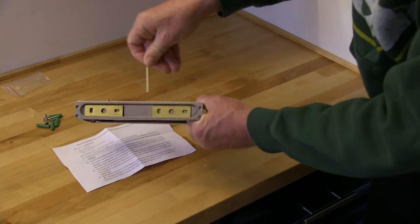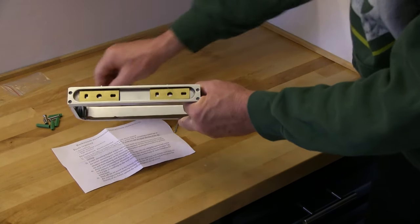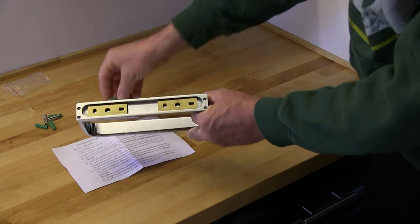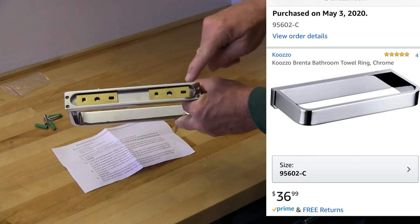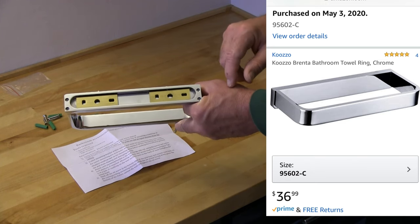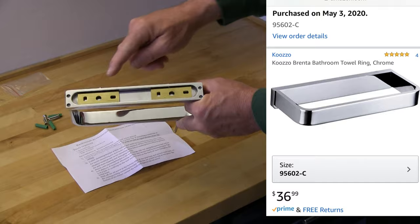This comes with an allen wrench, allen screws, anchors, and screws. We're positioning it so at least one side is going to be on the stud, and then once we get it up, we're going to tighten up these allens.